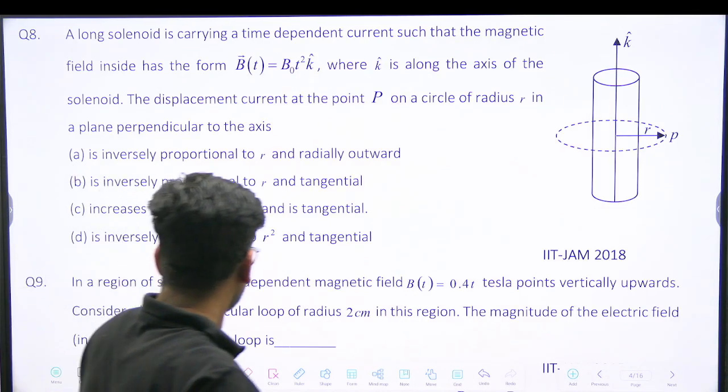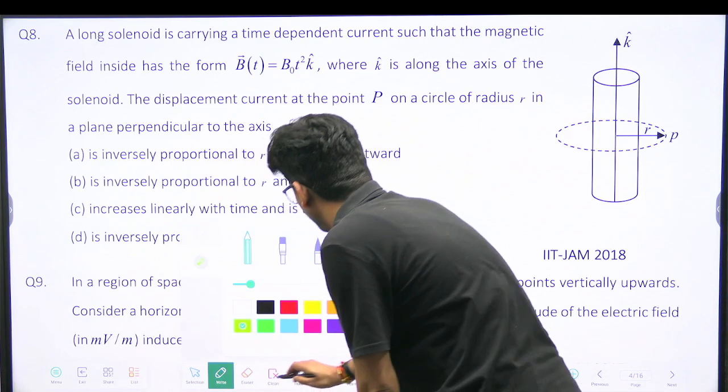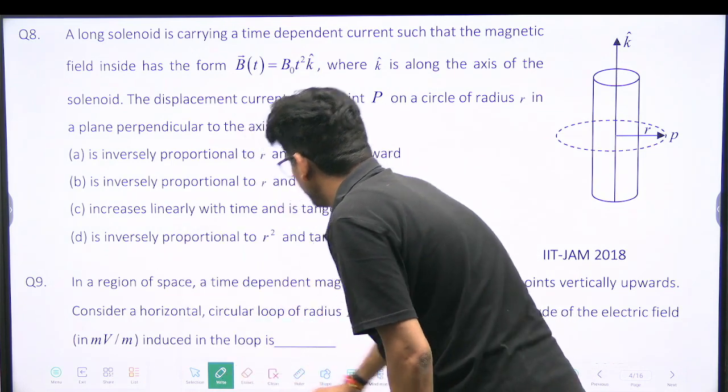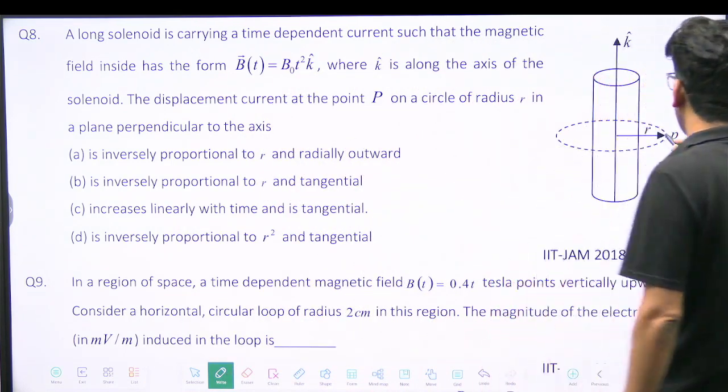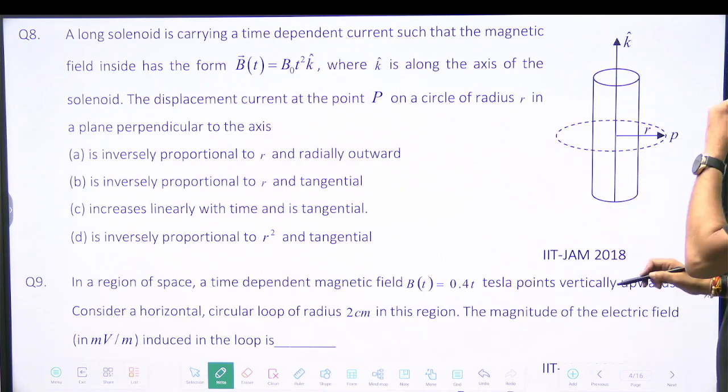Okay, so please see this very nice question where I have to calculate the displacement current at the point P on a circle of radius R.